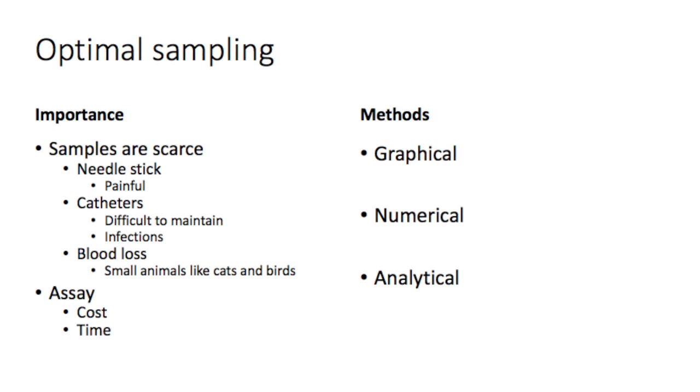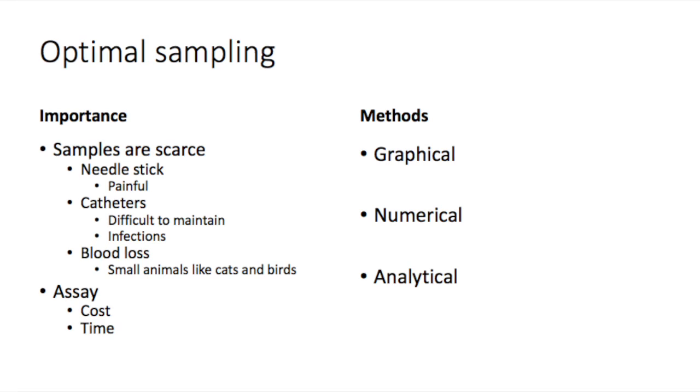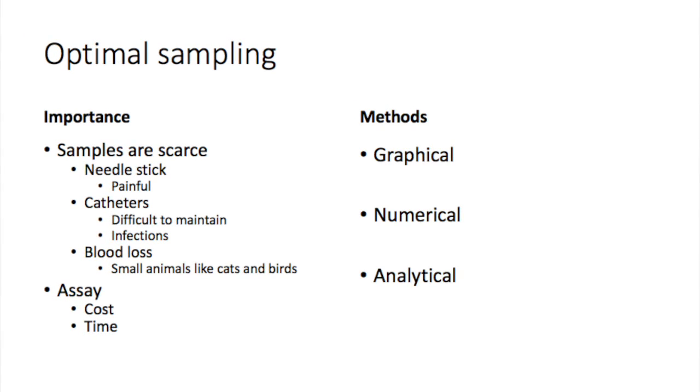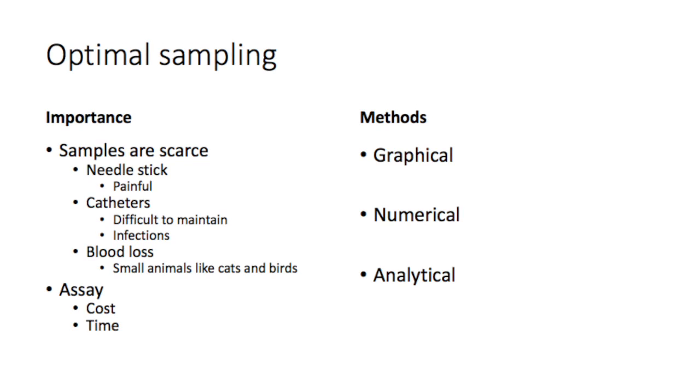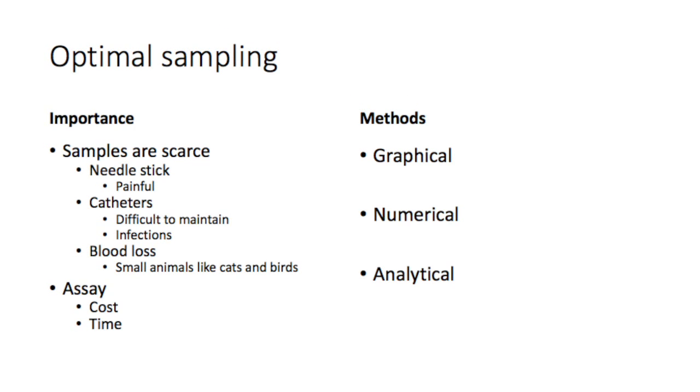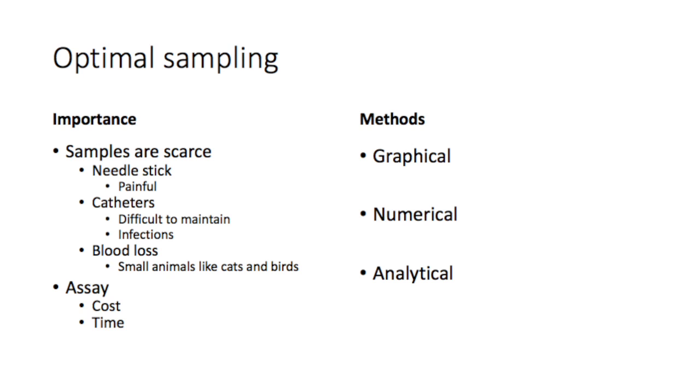I'm going to present a simple graphical method that you can use to identify optimal sampling times for a particular model. Please combine this knowledge with the guidelines that are presented in the excerpt from Revere's textbook that are uploaded in the course materials. There are also numerical and analytical methods that are used to optimize sampling times, but these are more complex and typically performed by software programs.